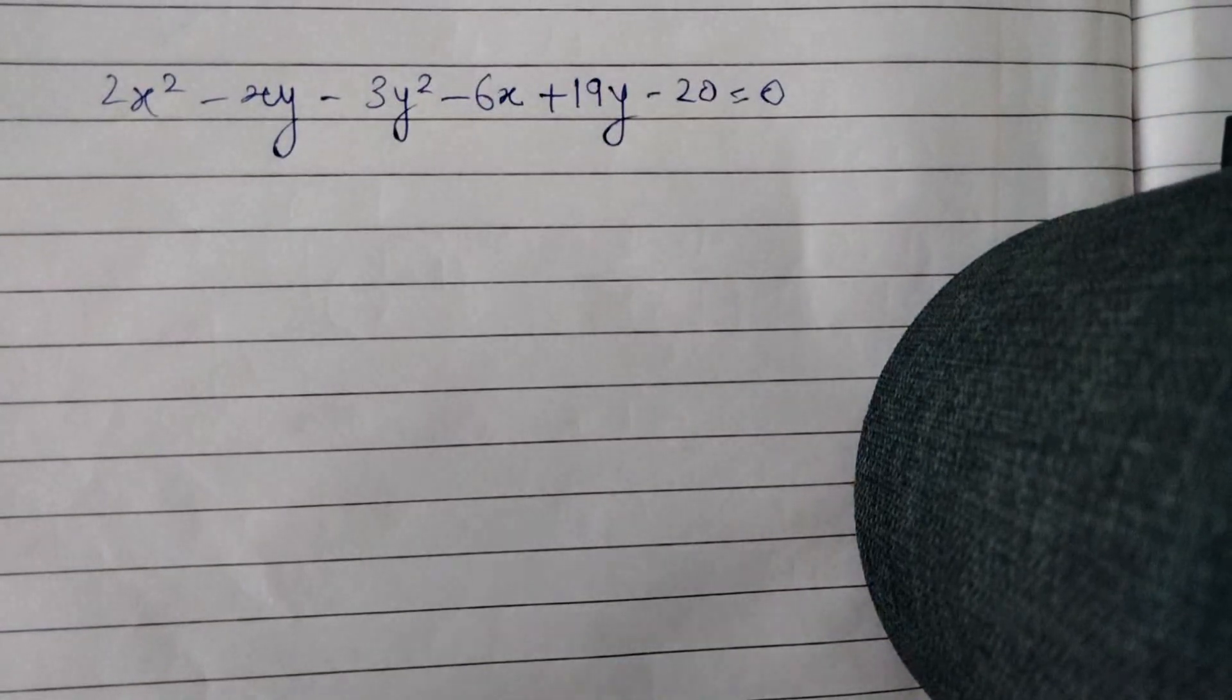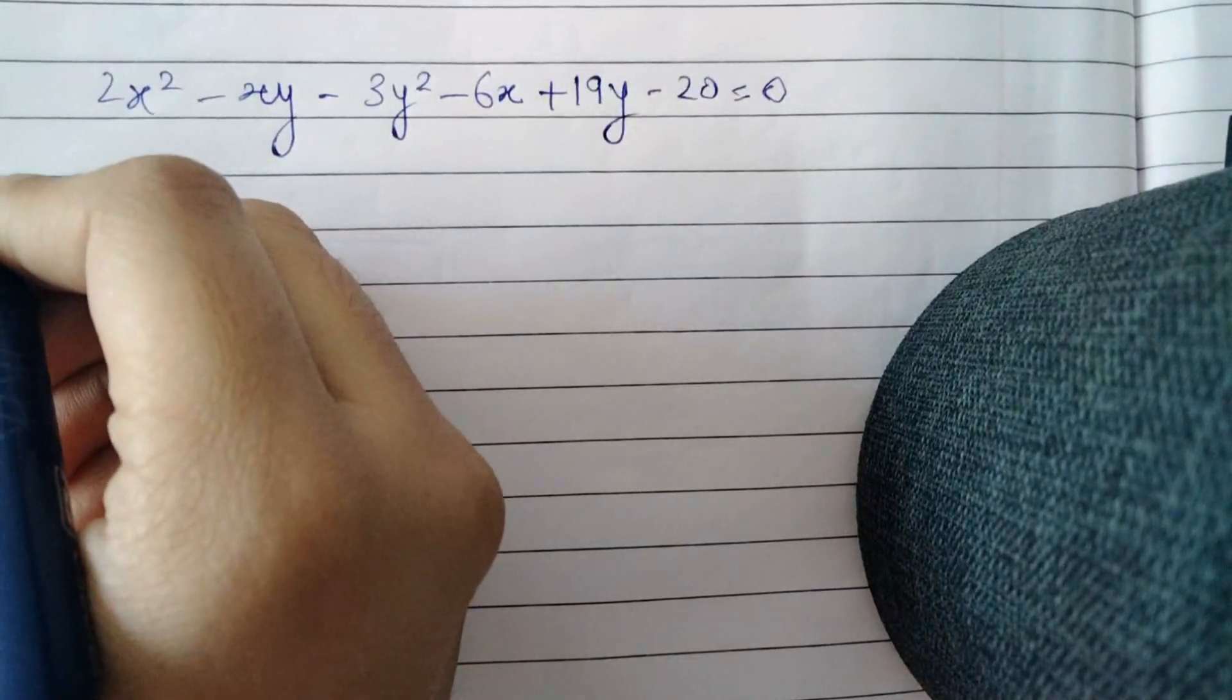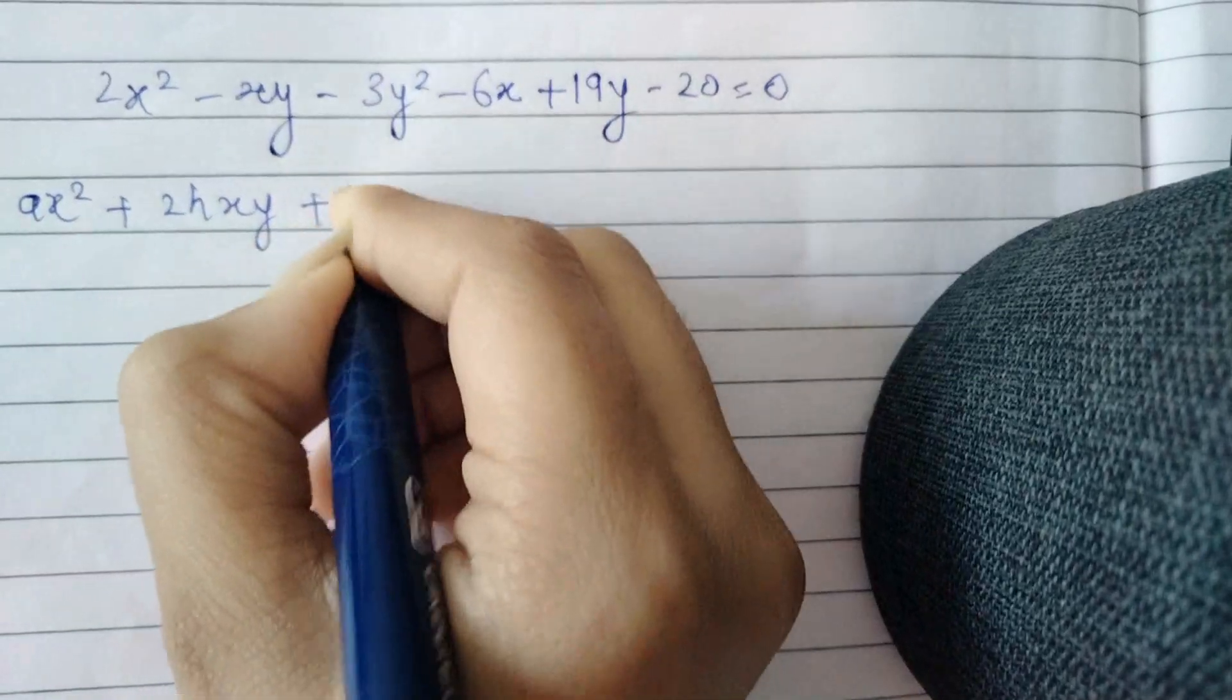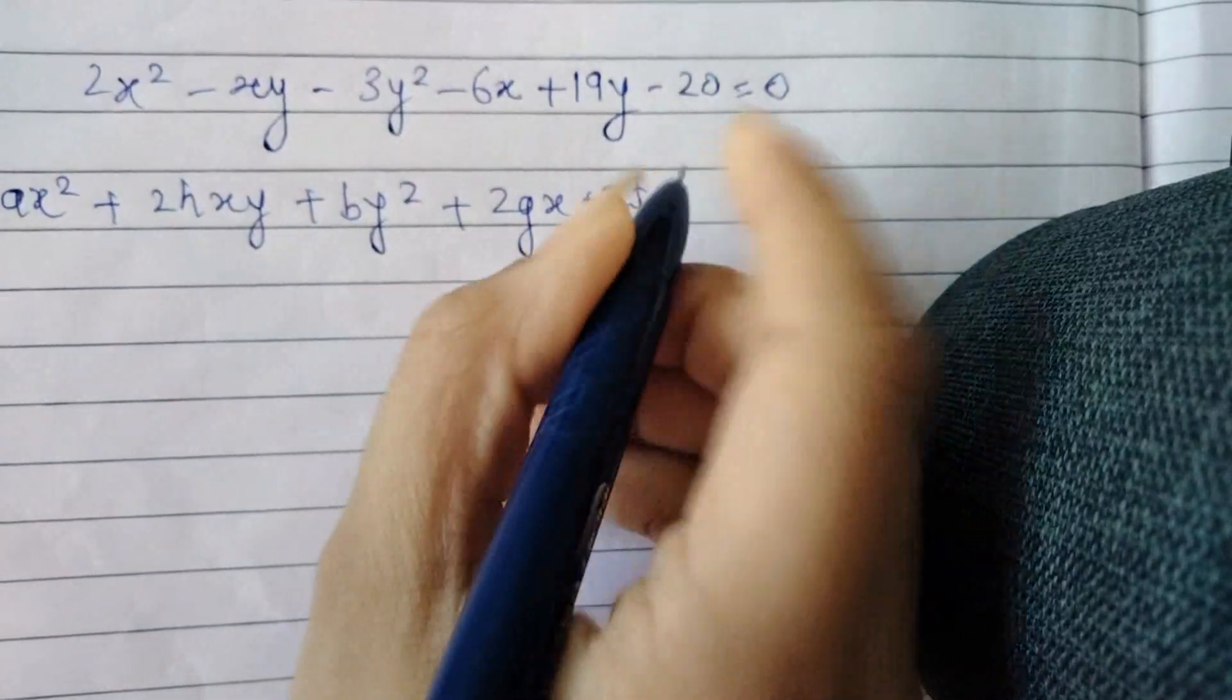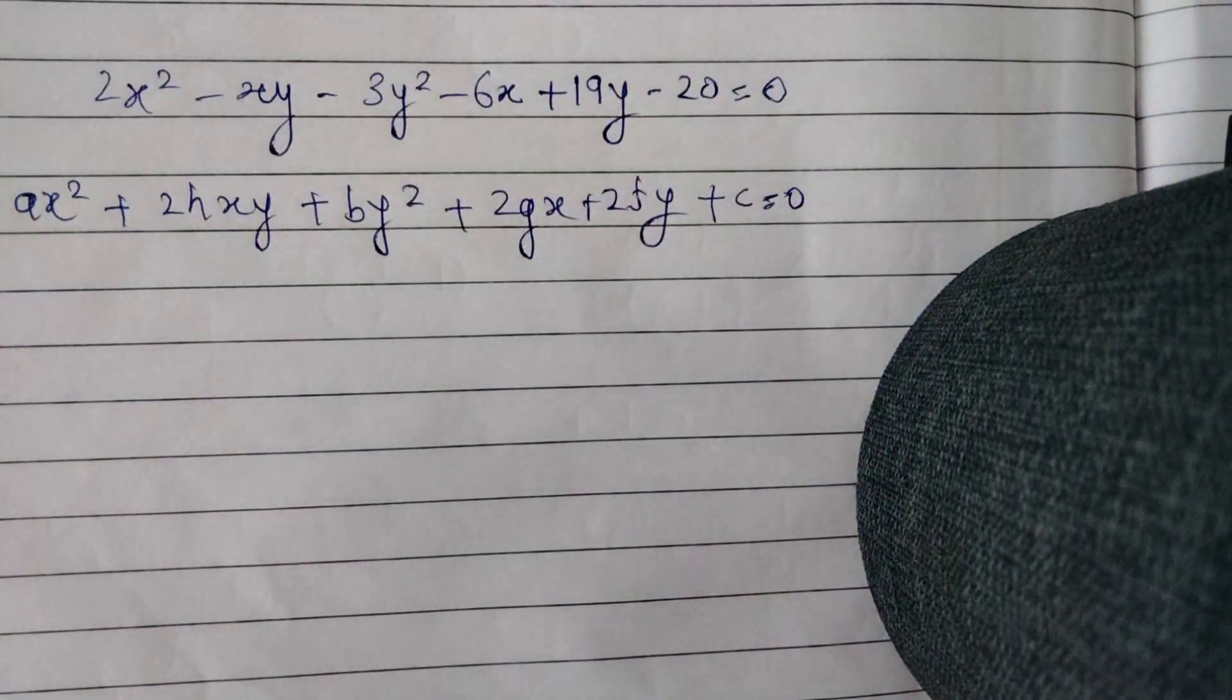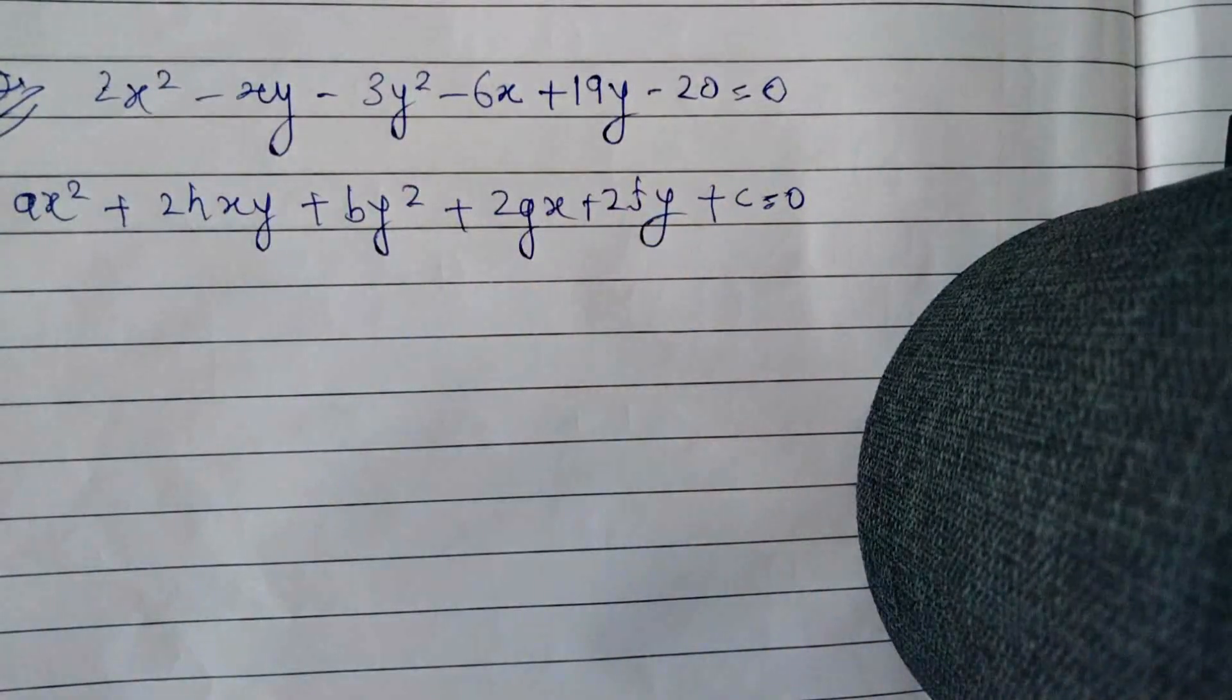This represents a pair of lines. We also know that the general second degree equation to denote a pair of straight lines is ax² + 2hxy + by² + 2gx + 2fy + c = 0. This is the general second degree equation to denote a pair of straight lines, and it is already given to us in the question that this represents a pair of lines.